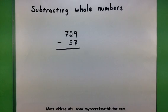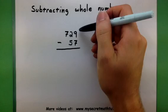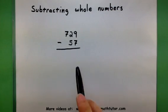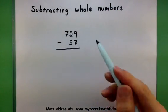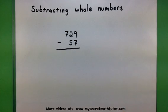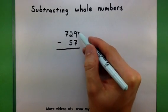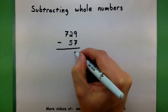Alright, so in our example problem we have 729 minus 57. I'm going to start over here on the right side and subtract just one place value at a time. So I'm going to look at the 7 and the 9, subtract those. 9 minus 7 equals 2. Perfect.